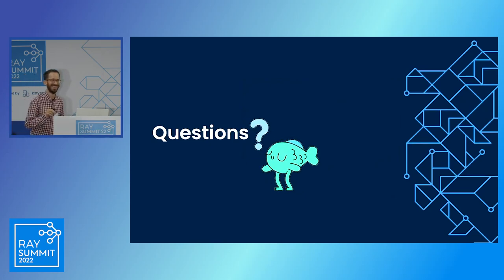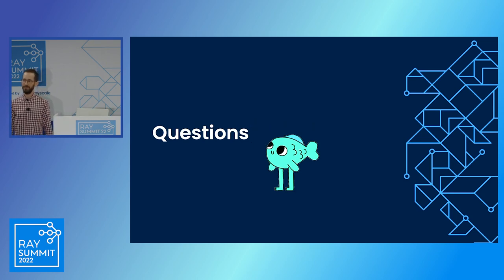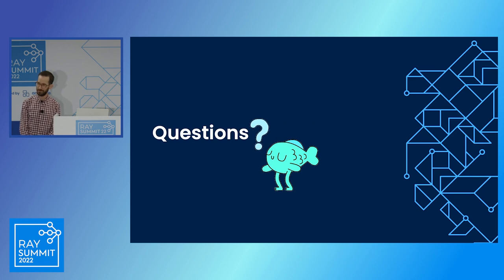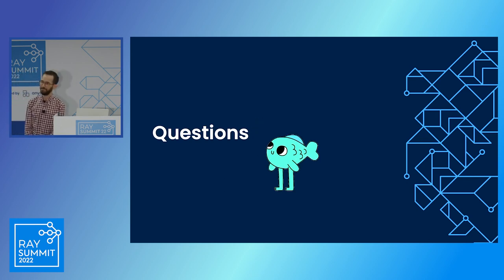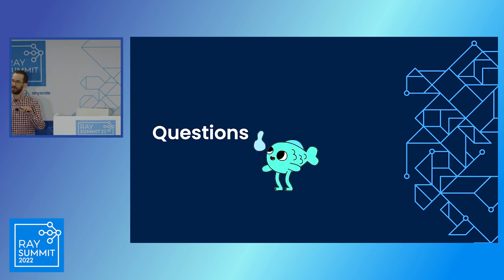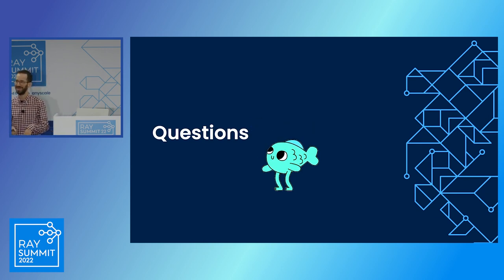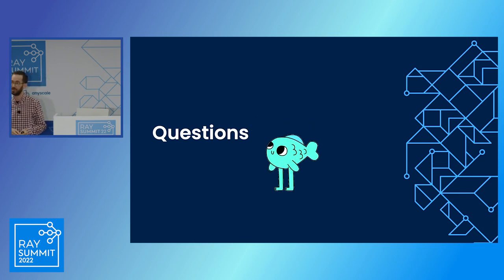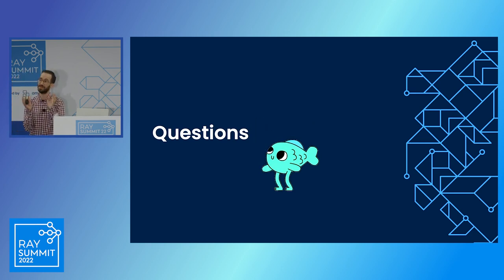Q&A: How does online serving interact with the workspace concept, particularly given the predefined TTL making long-lived deployments difficult? In online inference, we separate the workspace and a service — a service is a long-term running thing. The workspace is used to test out the API and the serving layer before you deploy to production. It can be a small dev environment for testing online predictions before deploying as a service.